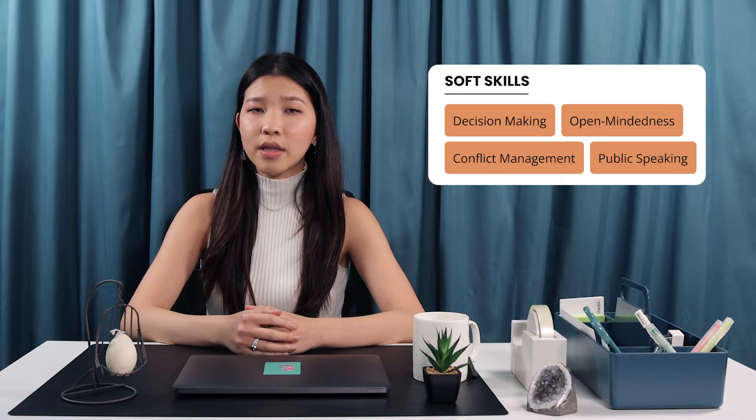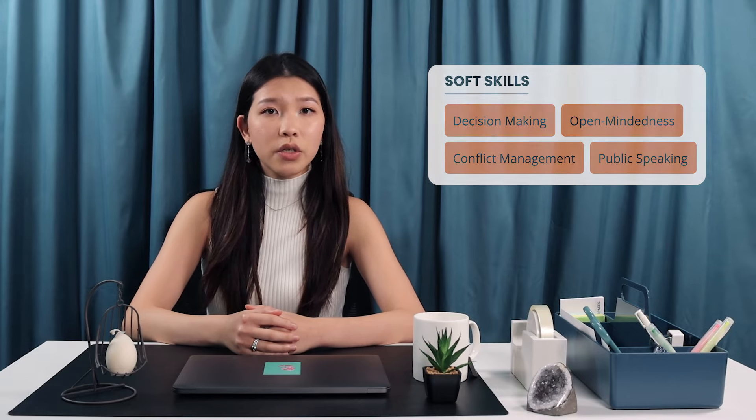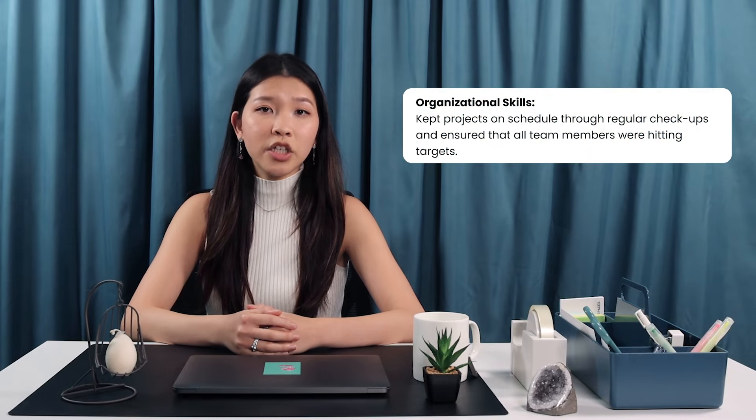Choose a select few from both categories and write one line explaining them. For example, if you put down organizational skills, write something along the lines of 'kept projects on schedule through regular checkups and ensured that all team members were hitting targets.' Language proficiency should also go under your skill section. Multiple languages can be useful in any situation because they can help you make a sale or build rapport with clients. Be sure to put an adjective such as intermediate, fluent or native before the language to explain your proficiency to the hiring manager.